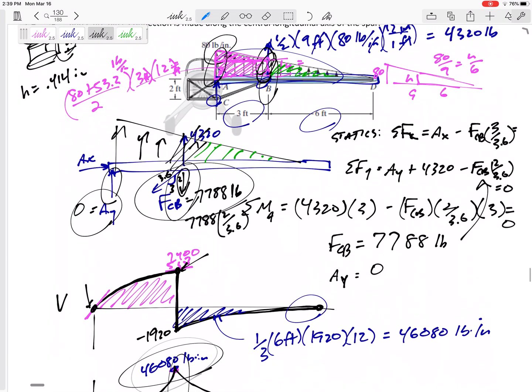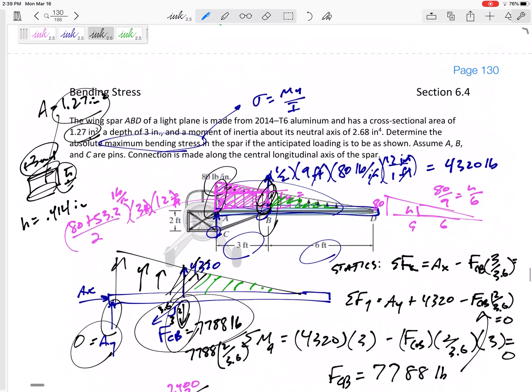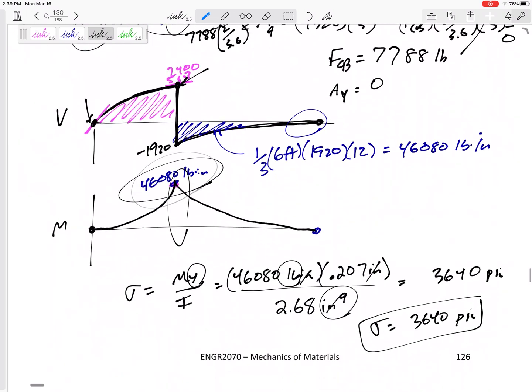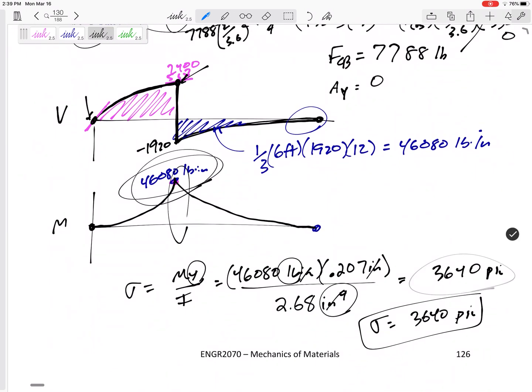Let's talk about this: if it's a positive moment, then the very top would have a compression of 3,640 and the very bottom would have a tension of 3,640. It just asks for the absolute value right there.